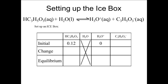The lactate ion, C3H5O3-, comes from the sodium lactate, which is a strong electrolyte and therefore completely dissociates into Na+ and C3H5O3-. So the initial concentration of C3H5O3- is the same as the concentration of the sodium lactate, which is given as 0.10 molar. There must be some H3O+ produced, so its change will be plus X, as will the lactate ion, since both are products. The lactic acid will decrease by X, giving equilibrium concentrations of 0.12 minus X for lactic acid, X for the hydronium ion, and 0.10 plus X for the lactate ion.